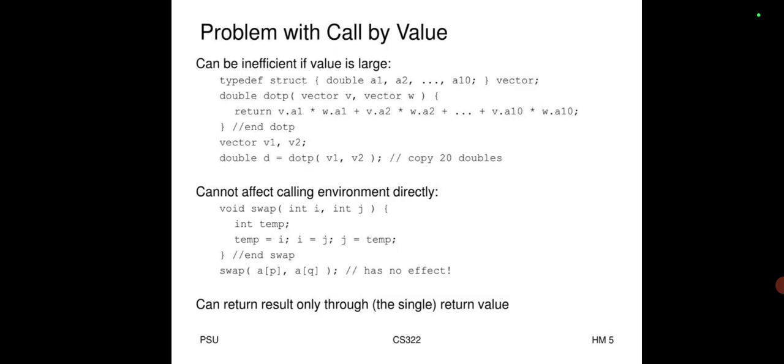Problem with call by value: it can be inefficient if the value is large. For example, a struct with fields a1 through a10 (typedef struct vector) passed to a dot product function results in large copying. Also, call by value cannot affect the calling environment directly — a swap function using call by value (void swap(int i, int j)) cannot return results except through a single return value.